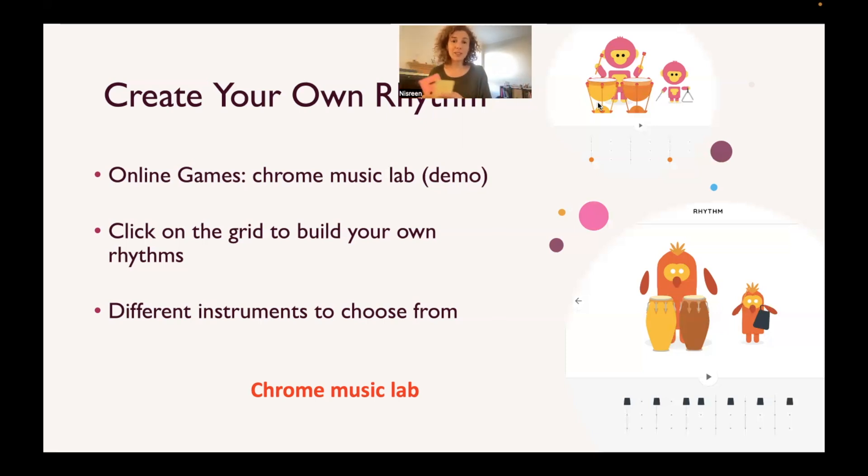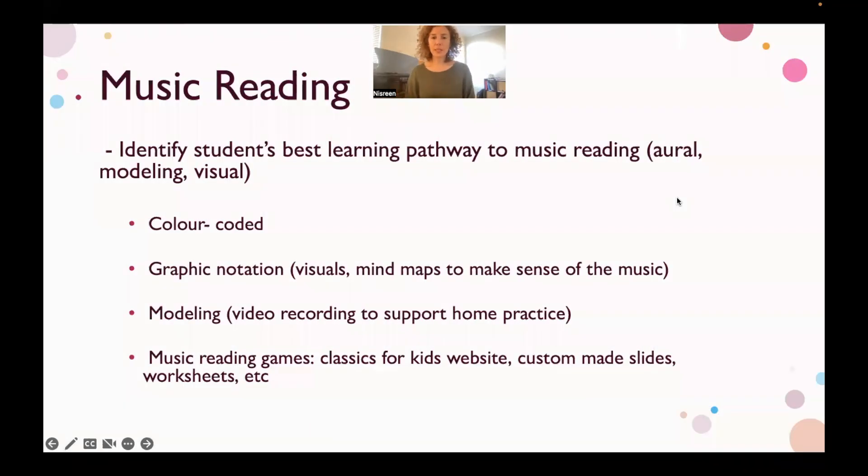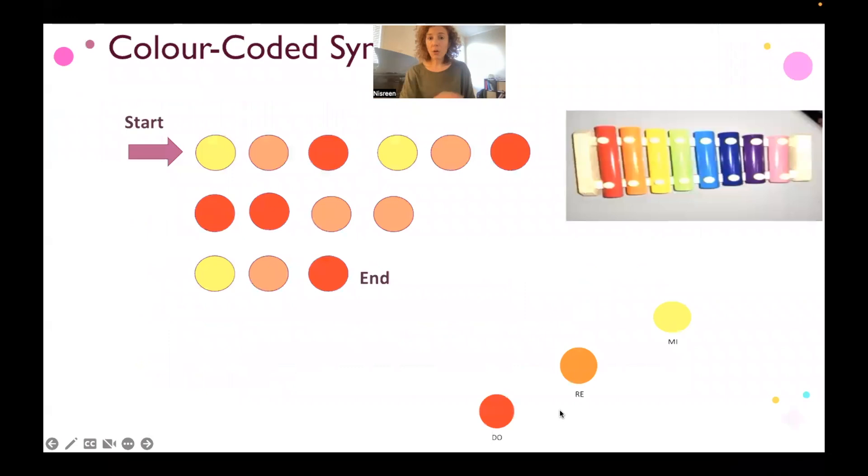For music reading, it's important to identify students' best learning pathway, whether it's aural or visual or by rote or a combination. And it's really important to find that out. Now I'm going to talk about different ways to approach music reading: color-coded, graphic notation, modeling, or using music reading games. It could be also a combination of a few things.